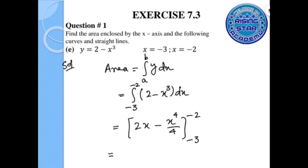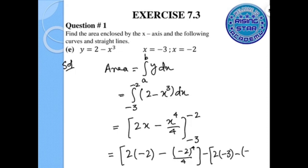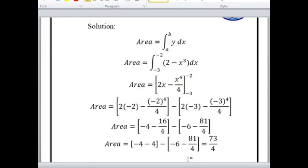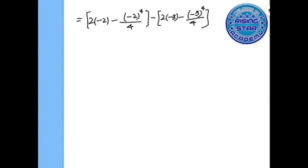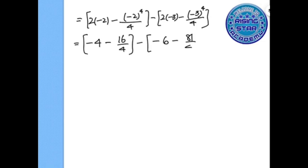Substituting the limits: for the upper limit x equals negative 2, we get 2 times negative 2 minus negative 2 to the power 4 over 4; for the lower limit x equals negative 3, we get 2 times negative 3 minus negative 3 to the power 4 over 4. Simplifying: negative 4 minus 16 over 4, then negative 6 minus 81 over 4. Removing brackets gives plus 6 plus 81 over 4.